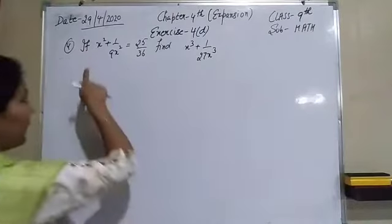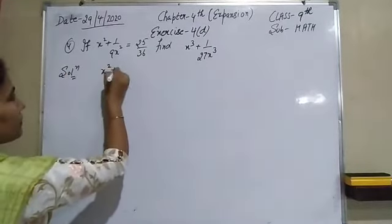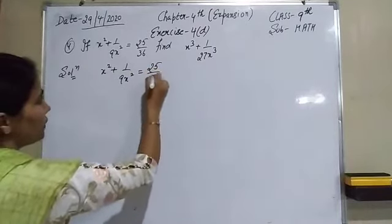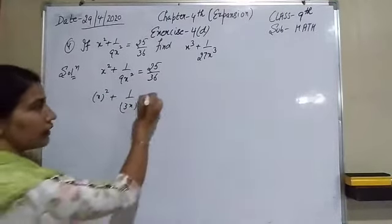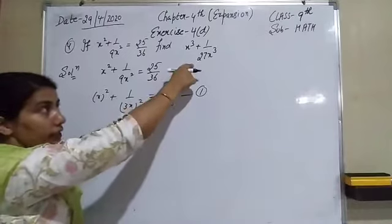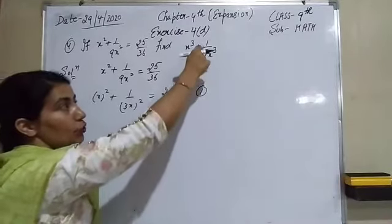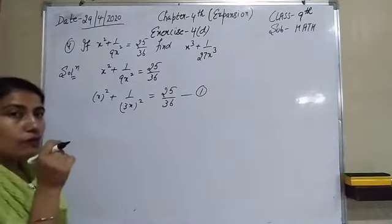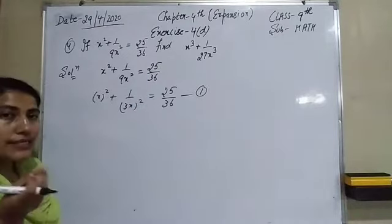For the third portion, we are given x² + 1/(9x²) = 25/36, and we have to find x³ + 1/(27x³). We can rewrite the given as x² + 1/(3x)² = 25/36. To find x³ + 1/(27x³), we first need to find the value of x + 1/(3x), because when we cube it we can easily get x³ + 1/(27x³).